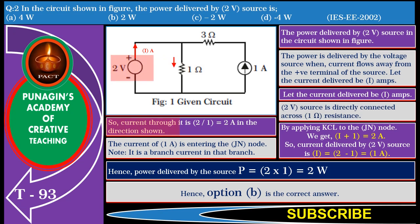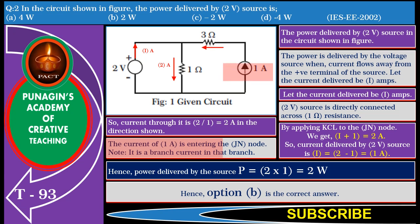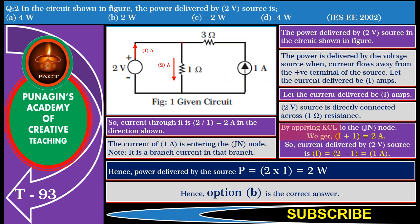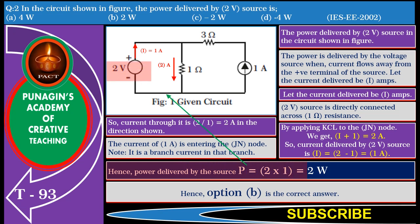So the current through it is 2 volts divided by 1 ohm, equal to 2 amperes in the direction shown. We also see that a current of 1 ampere is entering the junction node — note, it is a branch current in that branch. By applying KCL to the junction node, we get I plus 1 equals 2 amperes. So the current delivered by the 2 volt voltage source is I equal to 2 minus 1, equal to 1 ampere. Hence, power delivered by the 2 volt source P equals 2 volts into 1 ampere, equal to 2 watts.